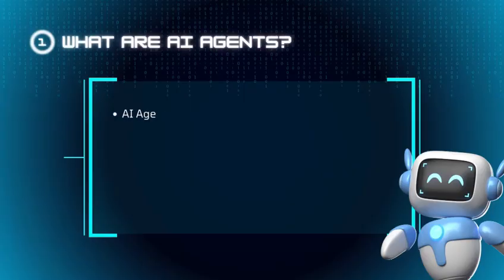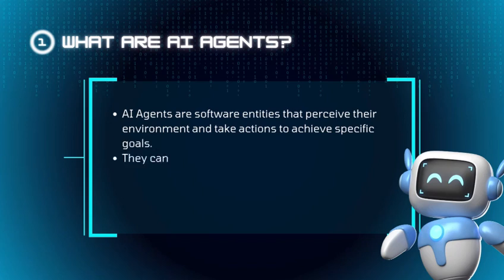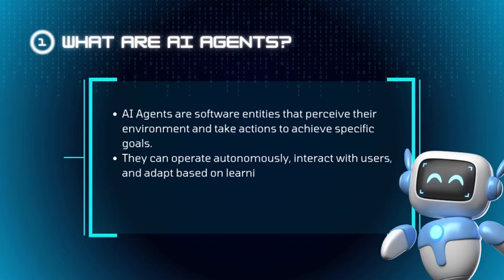What are AI agents? AI agents are software entities that perceive their environment and take actions to achieve specific goals. They can operate autonomously, interact with users, and adapt based on learning.